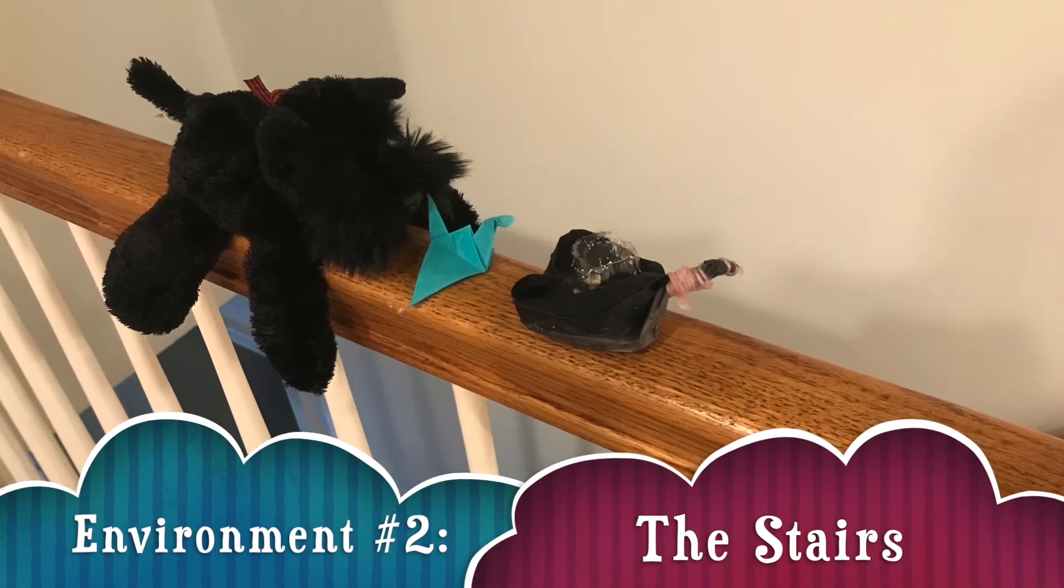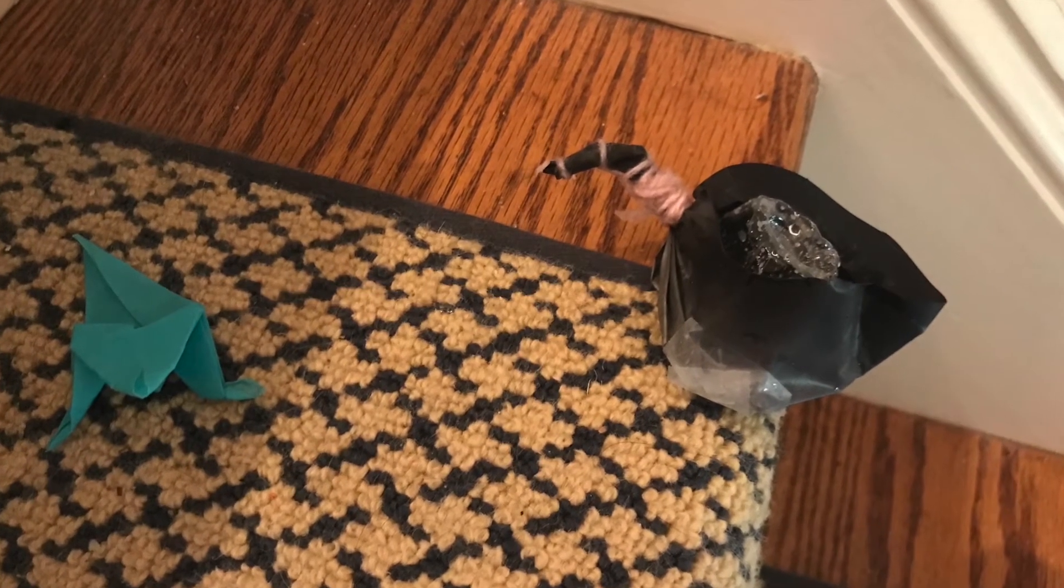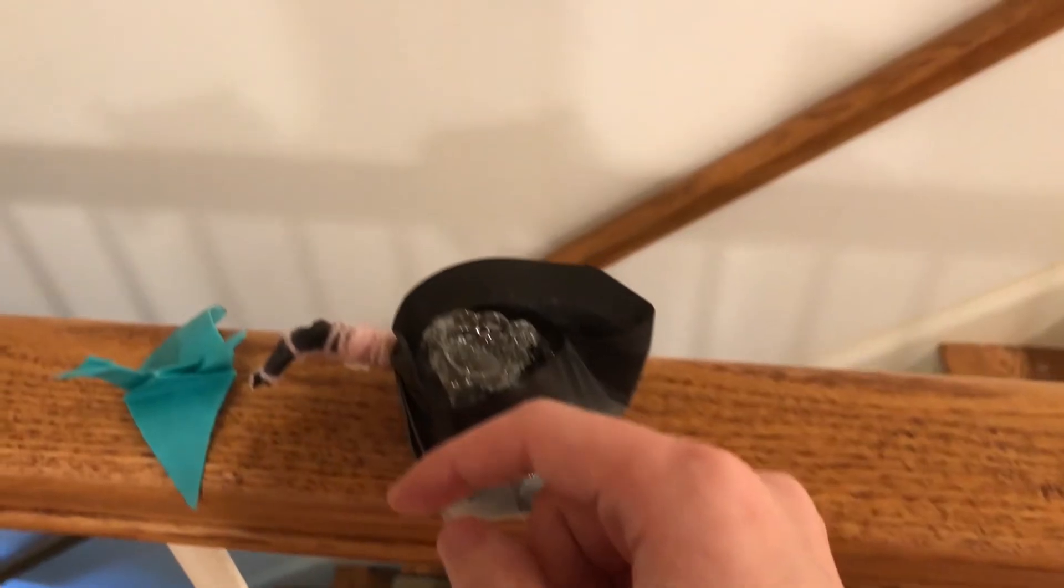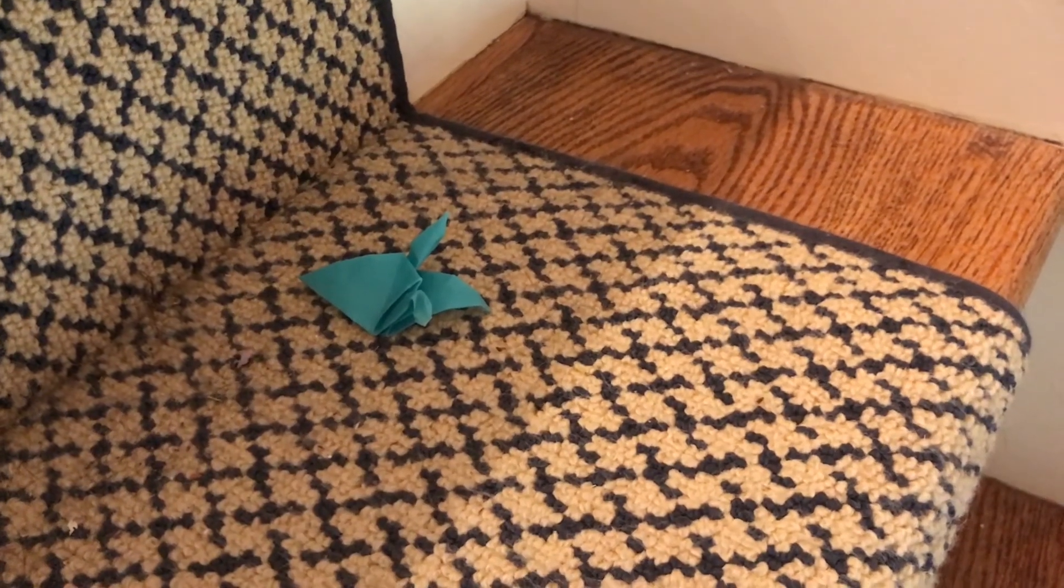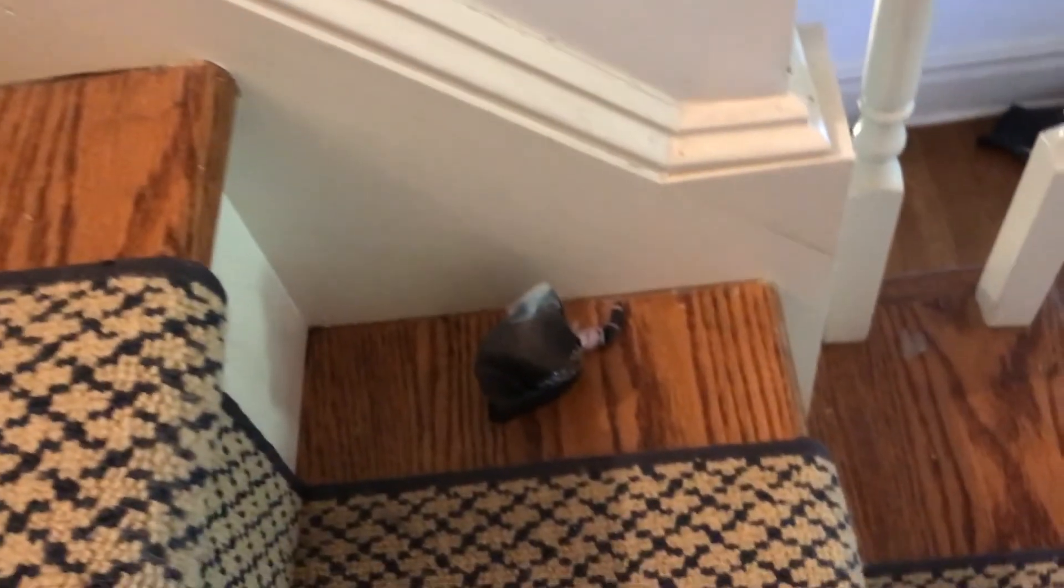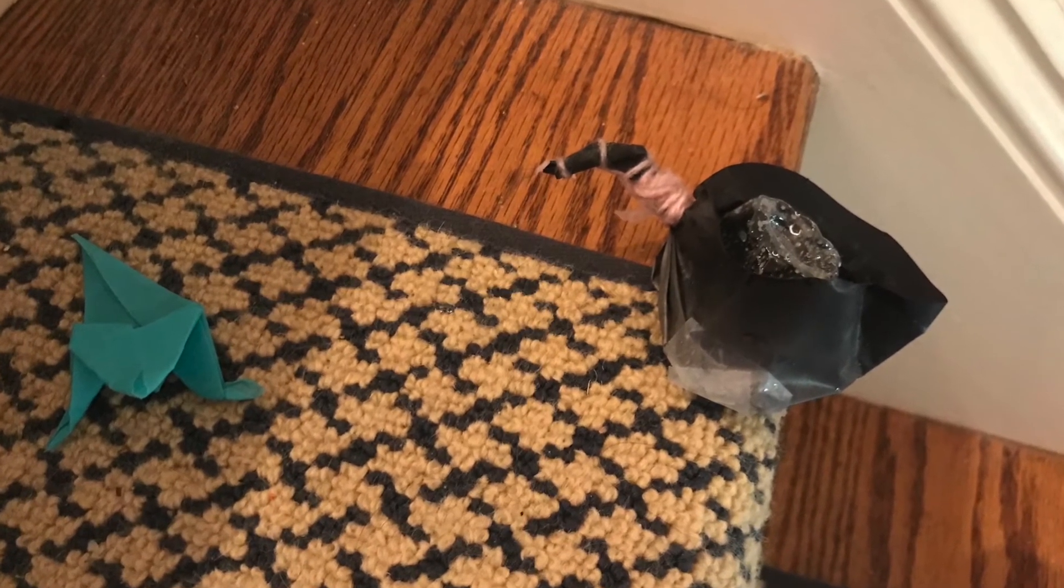Environment number two, the stairs. For this environment, we just dropped our birds down the stairs. I knocked my bird off first. Since I was holding on the railing for dear life, I let Renee knock down mine. While Scotty's fell onto its side, mine actually landed upright. To make sure it wasn't a fluke, we tried again. This time, Scotty's landed quite upright while mine tumbled on its side. I guess we know one thing for sure. Our birds were not built to fly.